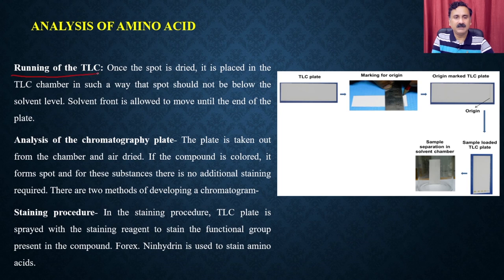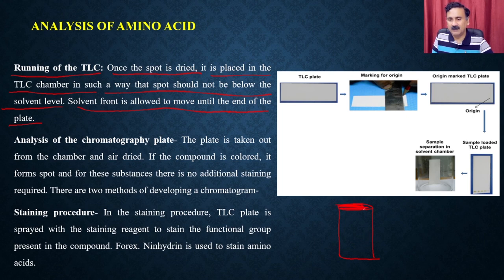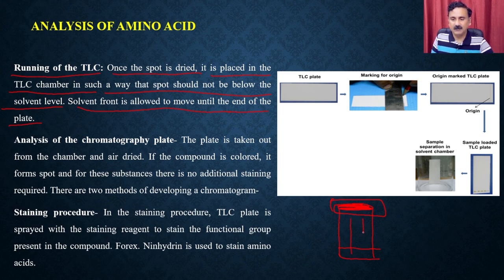Once the spot is dried, it is placed in the TLC chamber so that the spot is above the solvent level. The solvent front is allowed to move until the end of the plate. You develop the TLC chamber in a beaker or small chamber with a lid, so that the solvent vapor condenses and drives the upward movement. Make sure the starting line is above the solvent front so the sample does not dissolve before running.